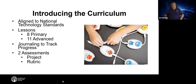One of the nice things about Code Jumper is it's not just a kit — it actually comes with curricula. It's great to use in the classroom with anyone: blind, visually impaired, or sighted students can all learn the concepts of coding together. The curriculum is aligned to national technology standards. It includes eight primary lessons, 11 advanced lessons, journaling to track students' progress, two assessments, and a project with a rubric. This is really valuable for TVIs, as it walks you through everything.